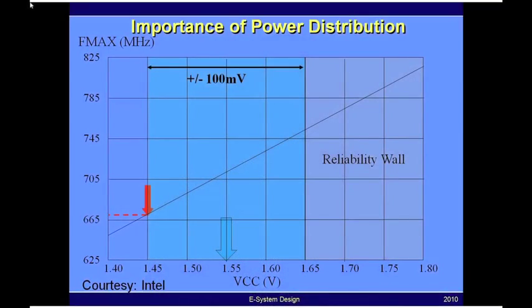As a designer, my goal is always to maximize fmax, and one way to do that is by using VCC as a control knob. Let's say the designer decides to increase VCC by around 50 millivolts to 1.6 volts. The minute you do that, you're now closer to the reliability wall, which means you no longer have the luxury of allowing plus or minus 100 millivolts variation across the power supply. That has to decrease, and by redesigning the power distribution network, that variation is reduced to plus or minus 50 millivolts — so on the high side, you are still less than the reliability wall.